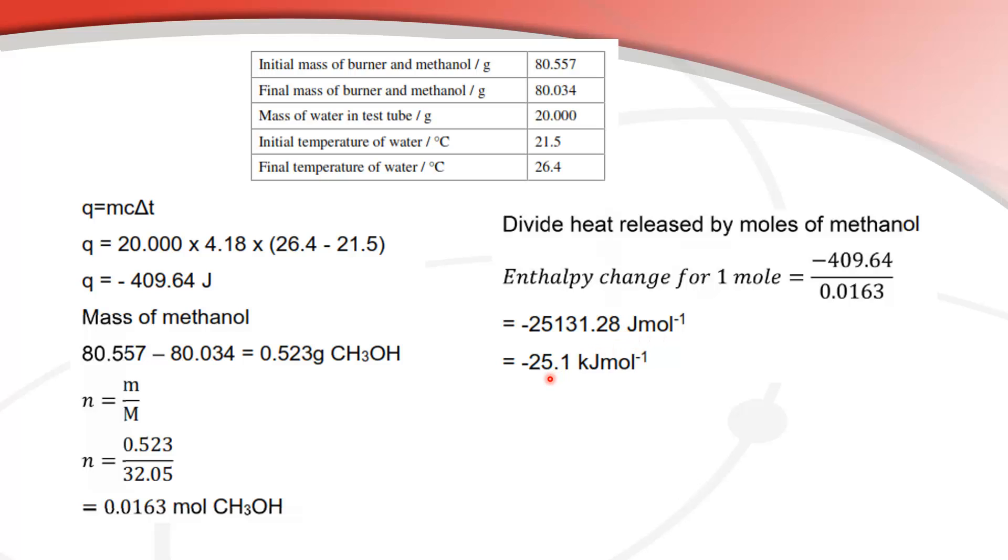We should give the answer to three significant figures because the temperature is the lowest number of significant figures and that's three and we should also change to kilojoules per mole so we get negative 25.1 kilojoules per mole.